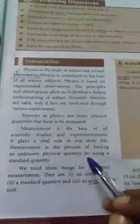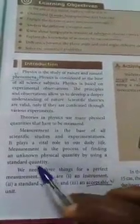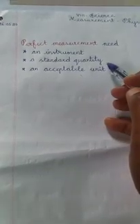It plays a vital role in our daily life. Measurement is the process of finding an unknown physical quantity by using a standard quantity. We need three things for a perfect measurement. What are the three things? An instrument, a standard quantity, an acceptable unit.